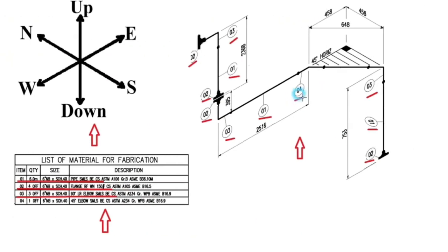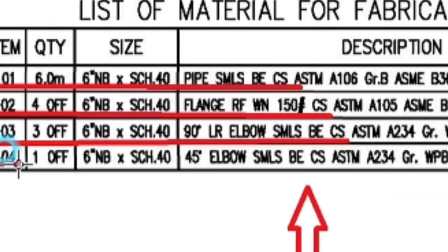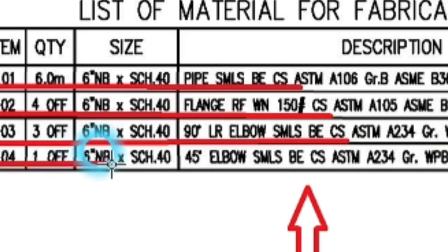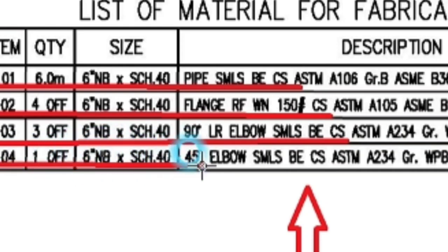Detail number 4 was used in one place in the pipe drawing. Detail number 4 has a quantity of 1 piece: 6-inch, schedule 40, elbow, 45 degree. The material is carbon steel.